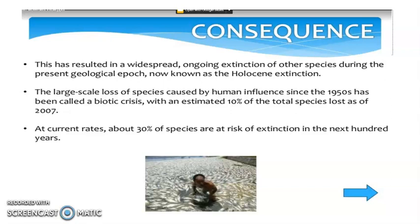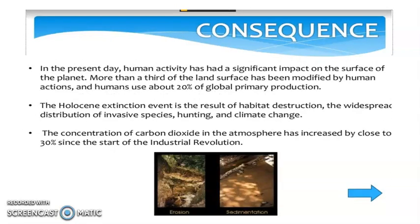The current rates include 30% of species at risk of extinction in the next 100 years. In the present day, human activity has had a significant impact on the surface of the planet. More than a third of the land surface has been modified by human actions, and humans use about 20% of global primary production.